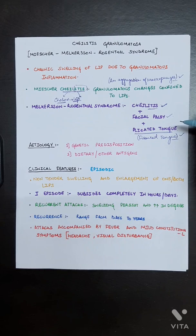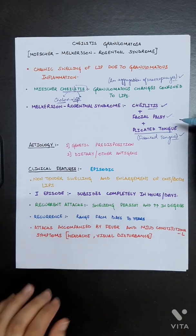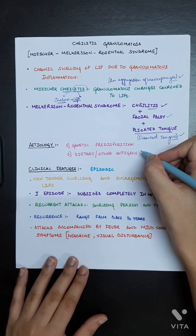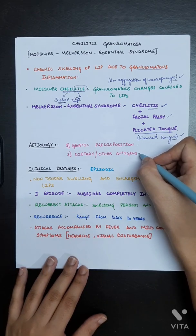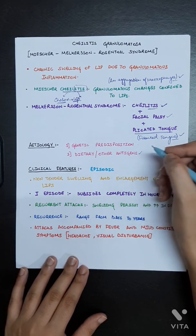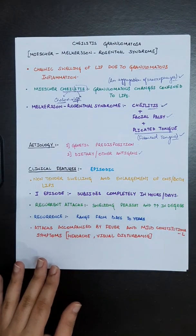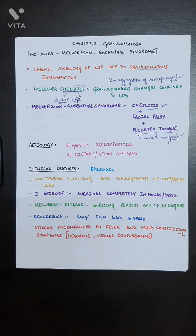In this syndrome there are three things that you have to remember: cheilitis, facial palsy and plicated tongue. Now the etiology part of cheilitis granulomatosa - first one is genetic predisposition, and the second one is dietary or other antigens. This is basically a genetic syndrome.